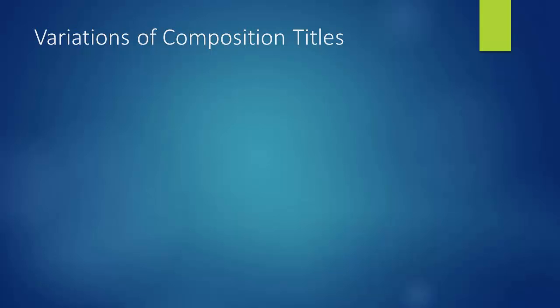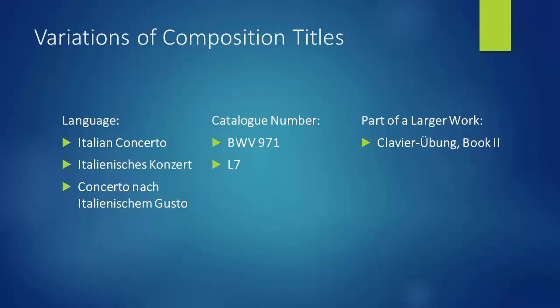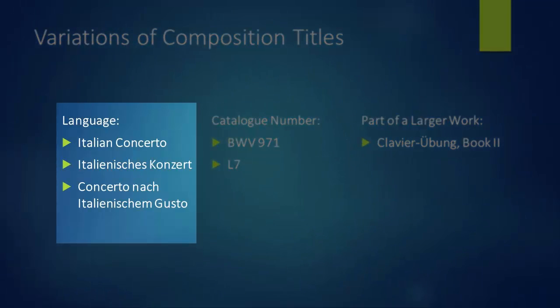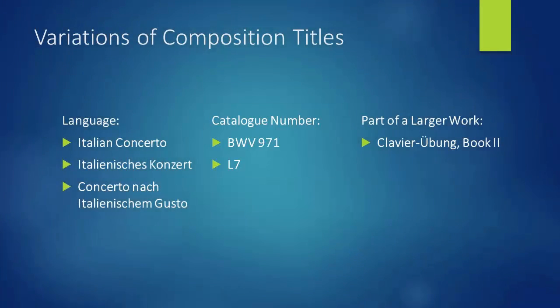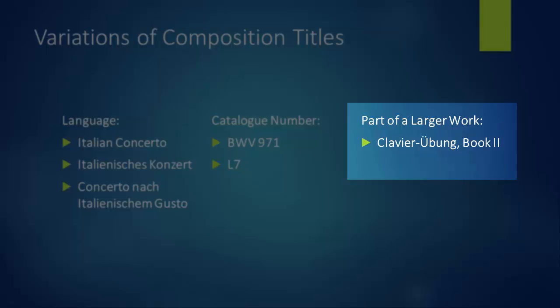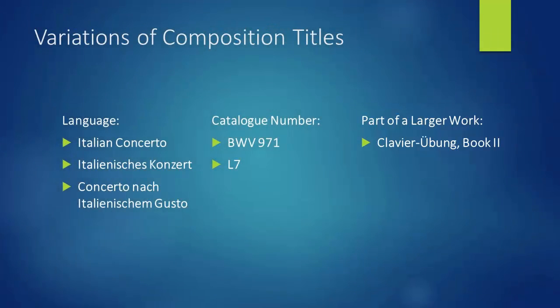For example, through some research online and in Grove, I've found that Bach's Italian Concerto may be referred to by any of the following titles in a variety of languages. It has not one but two catalog numbers, although BWV is the more commonly used catalog number. And it was published as part of the Clavier Übung Book 2. Any of these terms, combined with the composer's name in the catalog, may turn up the score that you're looking for. Keep trying a few different searches if you're not finding something right away.